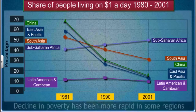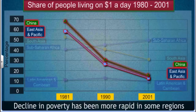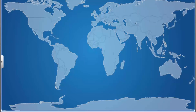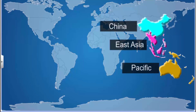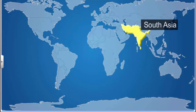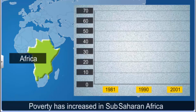However, the decline in poverty has been more rapid in some regions than others. Poverty in China and East Asia and Pacific has declined more rapidly than in South Asia. The rapid decline in China and East Asia is associated with rapid economic growth and huge investments in human resource development. South Asian countries did not match this economic growth, so the decline in poverty has not been so rapid there. The situation is very different in sub-Saharan Africa where the poverty ratio has actually risen from 41% in 1981 to 46% in 2001.